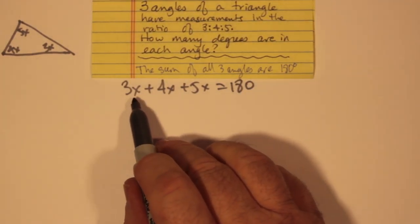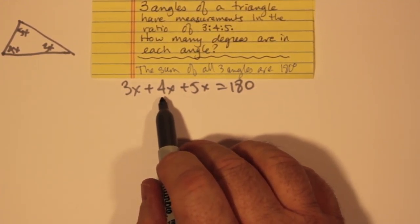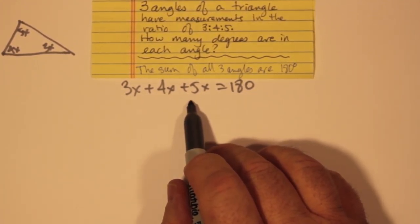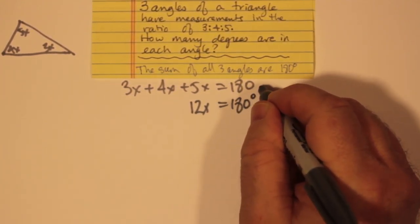And if we add these together, 3 and 4, 3x and 4x, we're adding like terms, makes 7x. And 7x and 5x make 12x. 12x is 180 degrees.